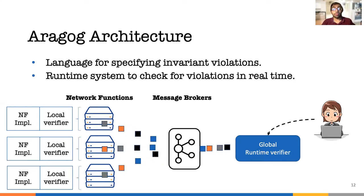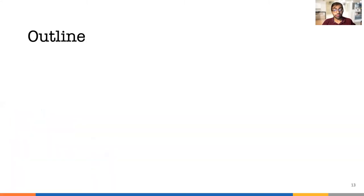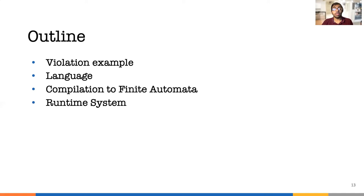The global runtime verifier raises alerts when violations are detected. For the rest of the talk, first I'm going to revisit the violation example of NatGateway. Then I will show how we can specify the invariant violation and how we compile the specification to finite automata. Then I will cover the runtime system and finally the implementation and evaluation of Aragog.